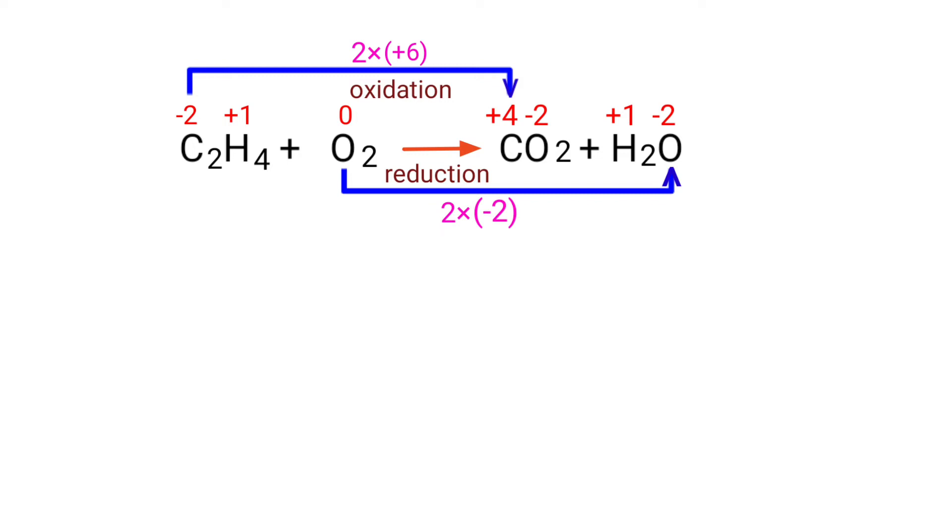Now you can make the increased oxidation number equivalent to the decreased oxidation number. To do this, multiply the decreased oxidation number by a coefficient of 3.